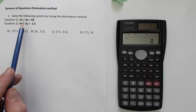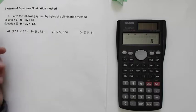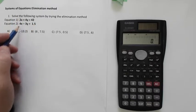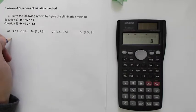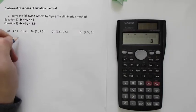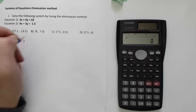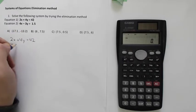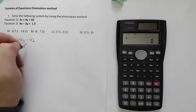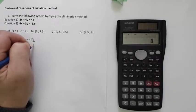And to do the elimination method, you'll remember, all we have to do is stack our equations up with x's over y's. So that's kind of been done for us, but I'll rewrite it right here. So 2x plus 4y equals 42. And then underneath, I've got 4x minus 3y is equal to 1.5.